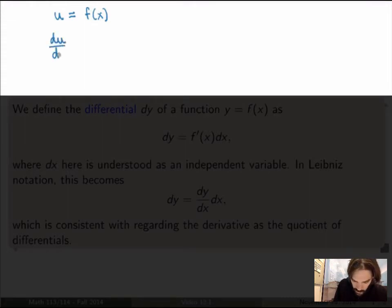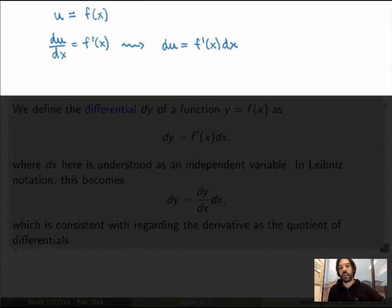the derivative here du/dx, which is f prime, and then somehow multiply, quote, by dx to get the change of dx in terms of du, as being du is equal to f prime dx.